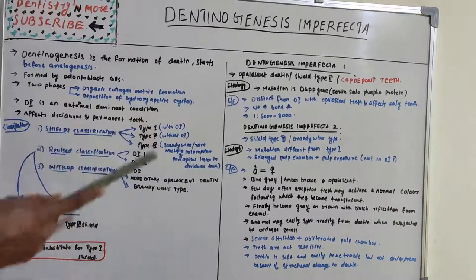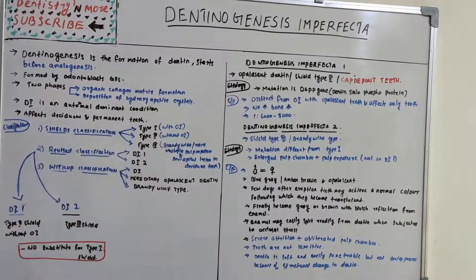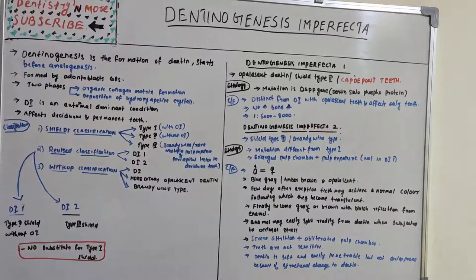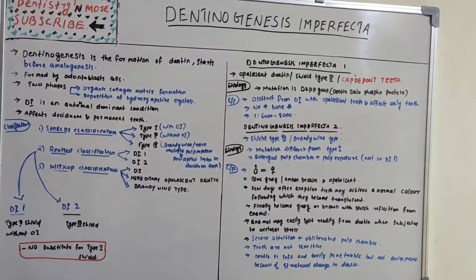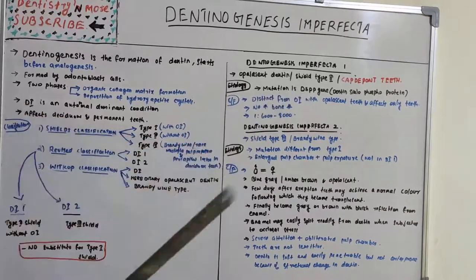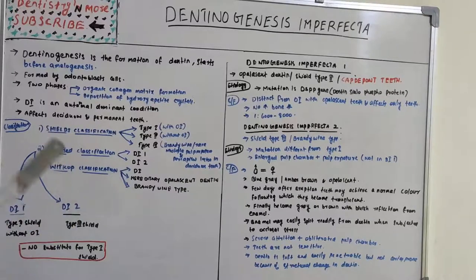Dentinogenesis imperfecta type 1 in the revised classification corresponds to Shields type 2, also known as 'opalescent dentin' or 'cap-tip-on teeth.' The etiology is a mutation in the DSPP gene — the gene for dentin sialophosphoprotein — which causes dentinogenesis imperfecta type 1.